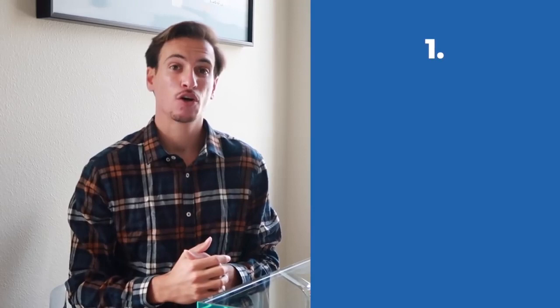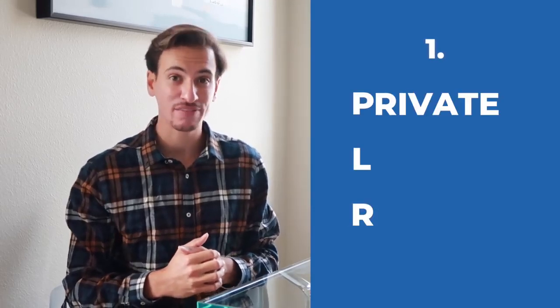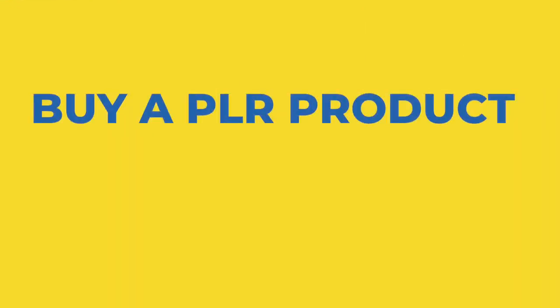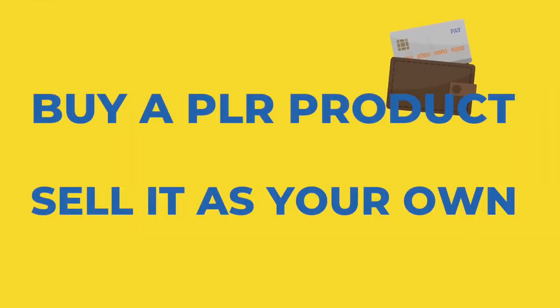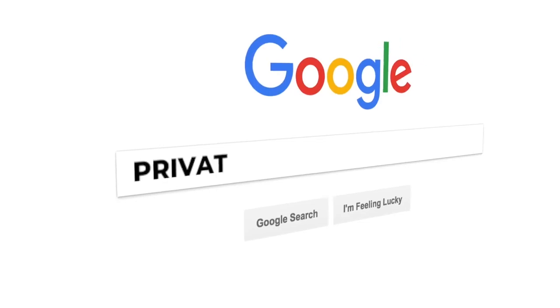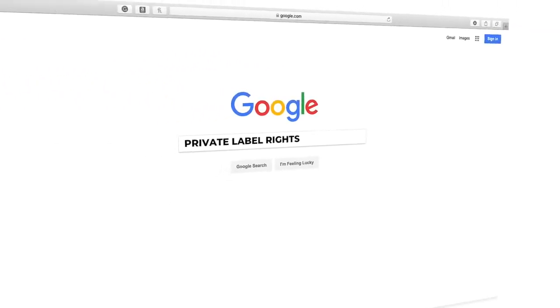The first way is called PLR, Private Label Rights. A PLR product is something you can buy from people that gives you the license to sell it as your own product. You can change the branding, add bonuses, put it into your own words, or just straight up take the private label rights product and sell it as your own. You can find private label rights products on the internet by googling it and that's one way to get started.